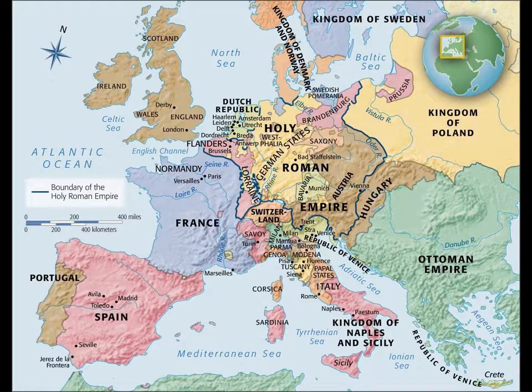Our map here shows Europe in the 17th century, with the major Catholic kingdoms of Portugal, Spain, and France, allied with the Papal States and many other republics in the Italian Peninsula, contending the newly Protestant lands throughout the Holy Roman Empire and the newly independent Dutch Republic. As the forces of Protestantism and Catholicism waged war against each other, both in word and action, the role of art in religion was also hotly debated.